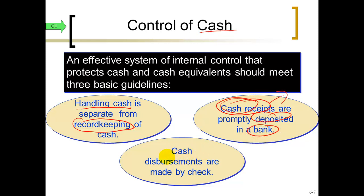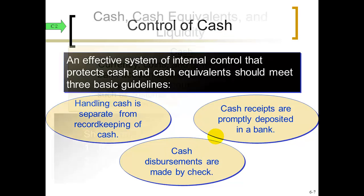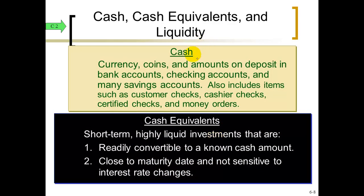When you spend money — disbursements — the best way to do that is with your checking account, probably writing checks. On a check you have the date, the amount written twice, who you're paying, and probably what you're paying for, and it all matches up with other types of documents. So paying with currency and coins, you try to avoid that as much as possible.